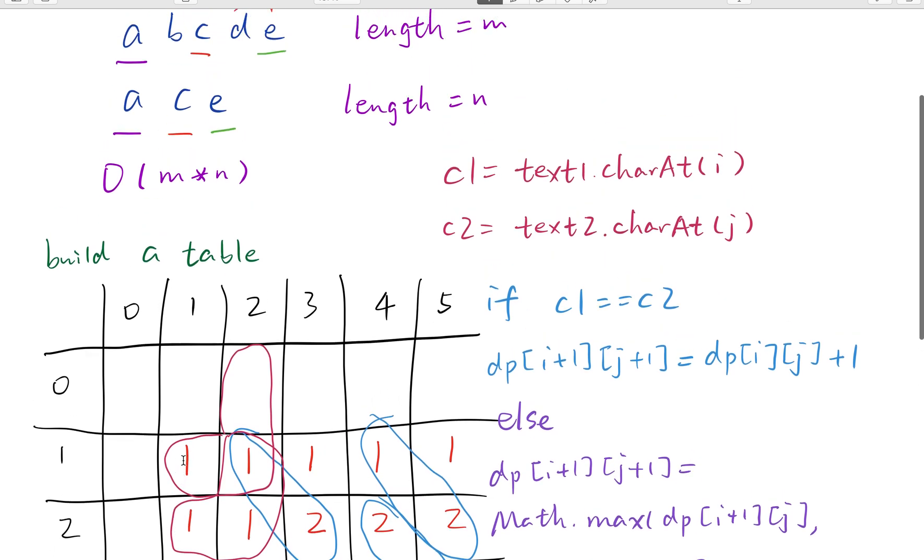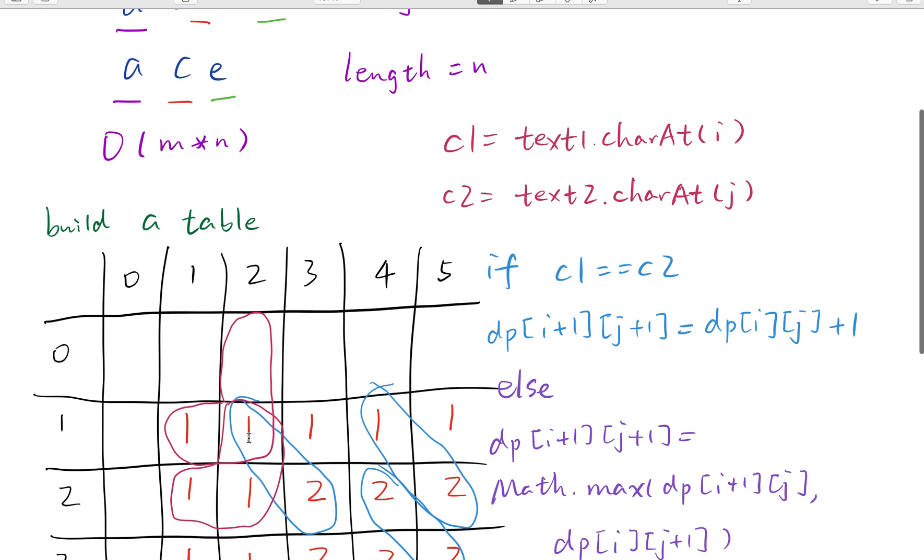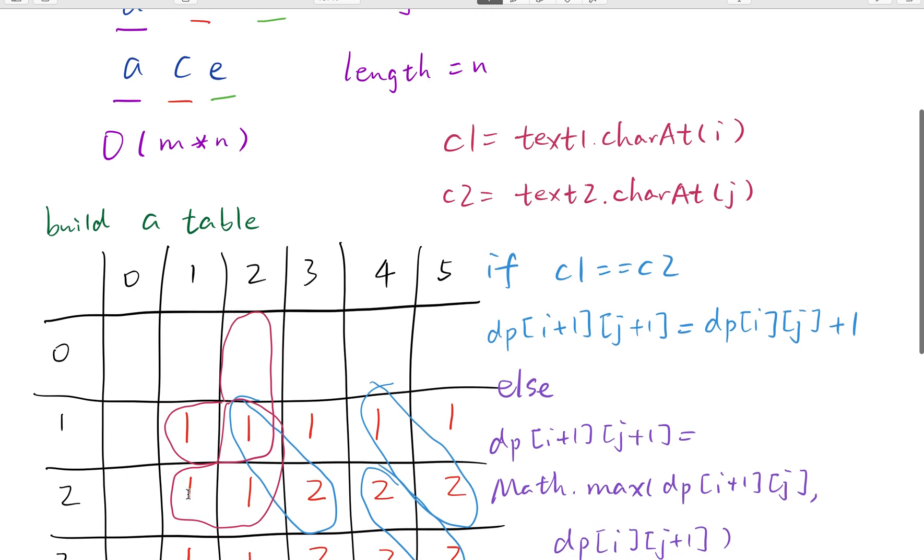And when we compare this a and ac, even though a is not equal to c, we will use 1. So actually when the current two characters are not equal, we will get the maximum value between this place and this place, its left place and its upper place. So we get the maximum between 1 and 0, so we fill up 1. And we get the maximum value between 1 and 0, so we fill up 1.